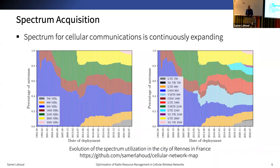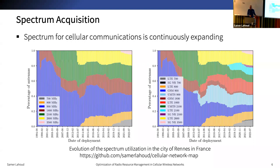More recently, in 2019, we see that the spectrum is expanding even more with the addition of lower bands in the 700 MHz, represented in gray at the bottom of the figure, and higher bands in the 3.5 GHz, represented in pink. The latter band is typically dedicated to the new 5G deployments.